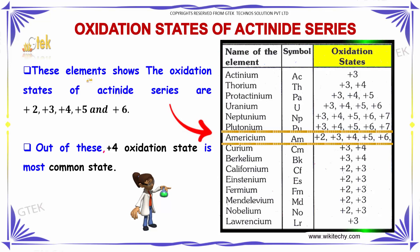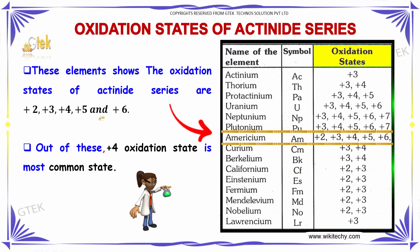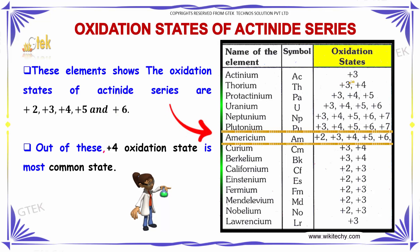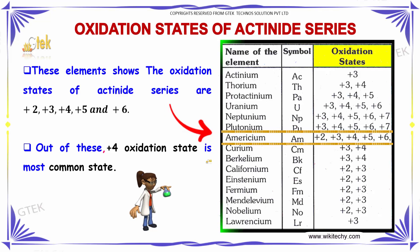Oxidation State: These elements show the oxidation states of the actinide series, which are almost +2, +3, +4, +5, and +6. You are able to see the oxidation states of different elements in the actinide series. Out of these, the +4 oxidation state is the most common state.